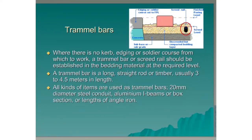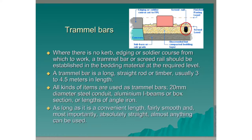All kinds of items are used as trammel bars: 20mm diameter steel conduit, aluminium eye beams or box sections, or lengths of angle iron. As long as it is a convenient length, fairly smooth, and most importantly absolutely straight, almost anything can be used.